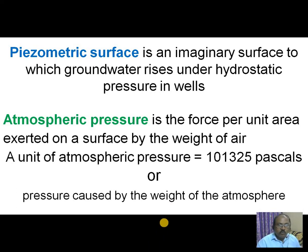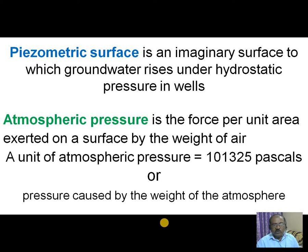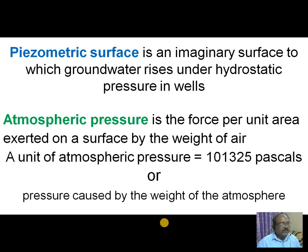Atmospheric pressure is the force per unit area exerted on a surface by the weight of air. One unit of atmospheric pressure is equal to 101,325 Pascal, or the pressure caused by the weight of the atmosphere. These are the two important terms to be learned by civil engineering students during the calculation of radius of influence.